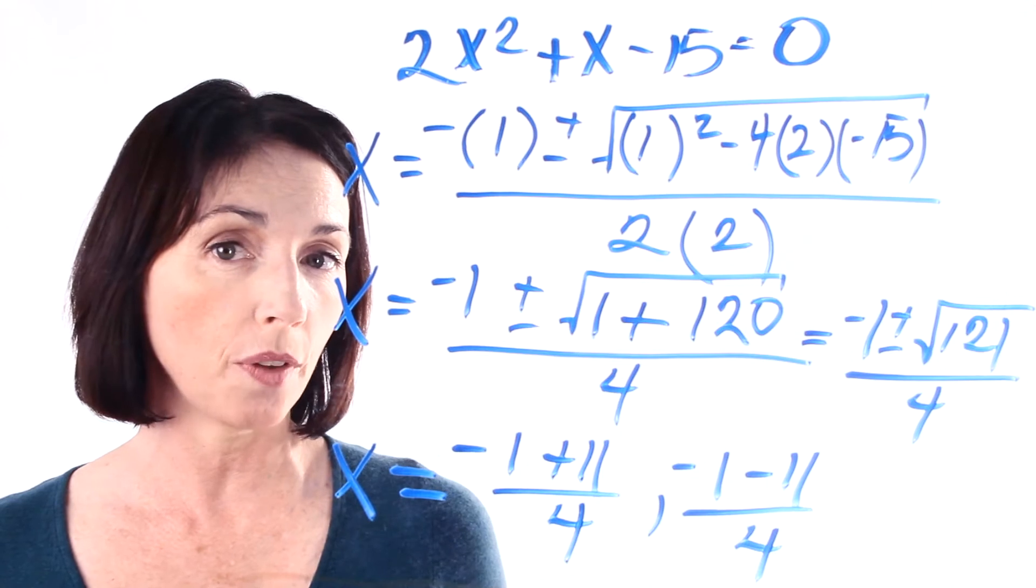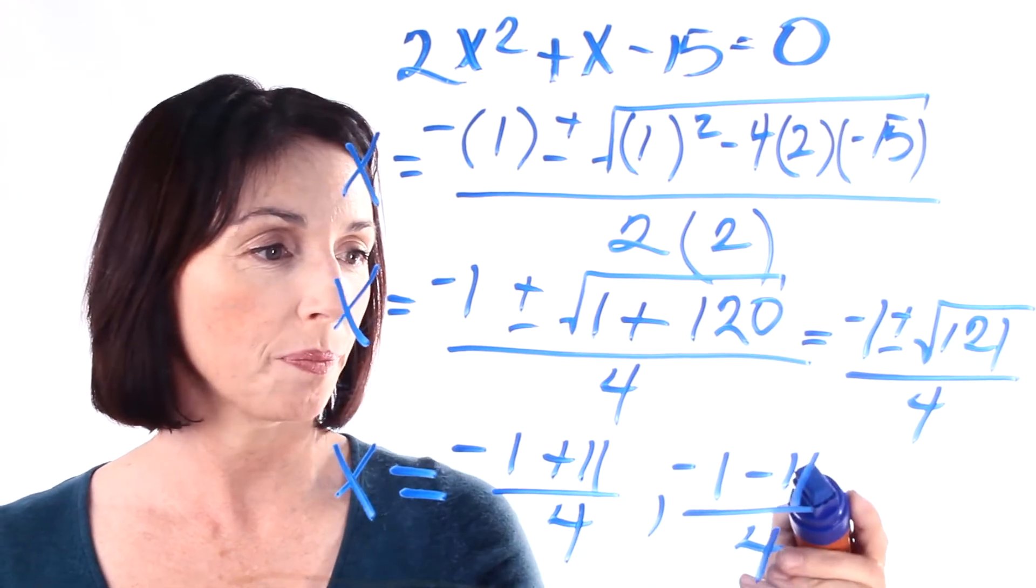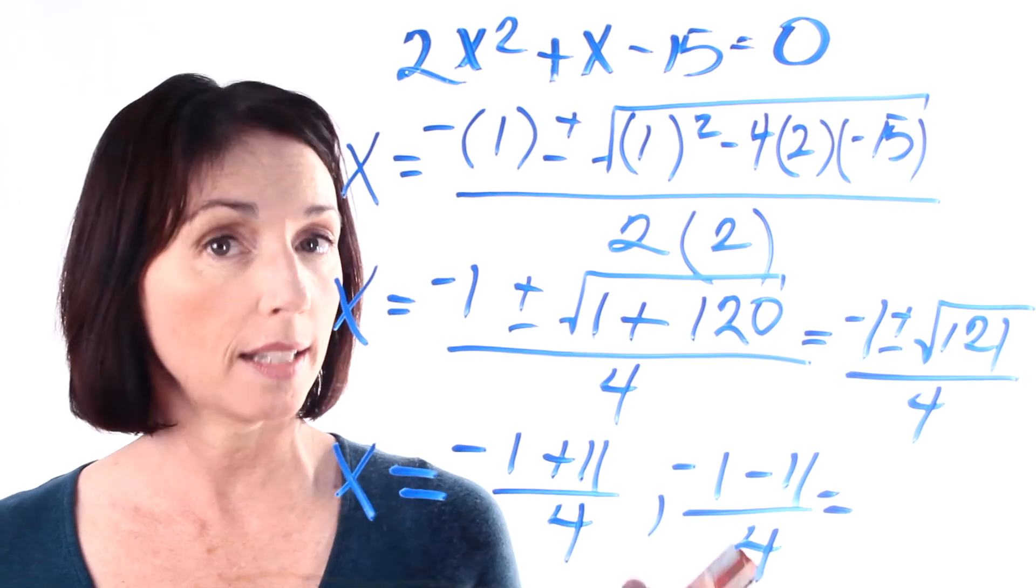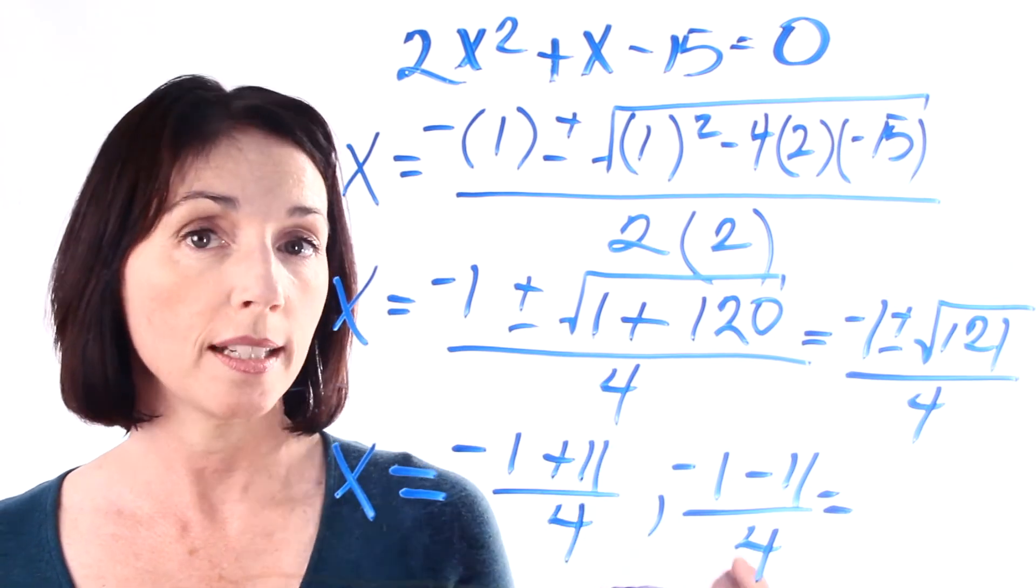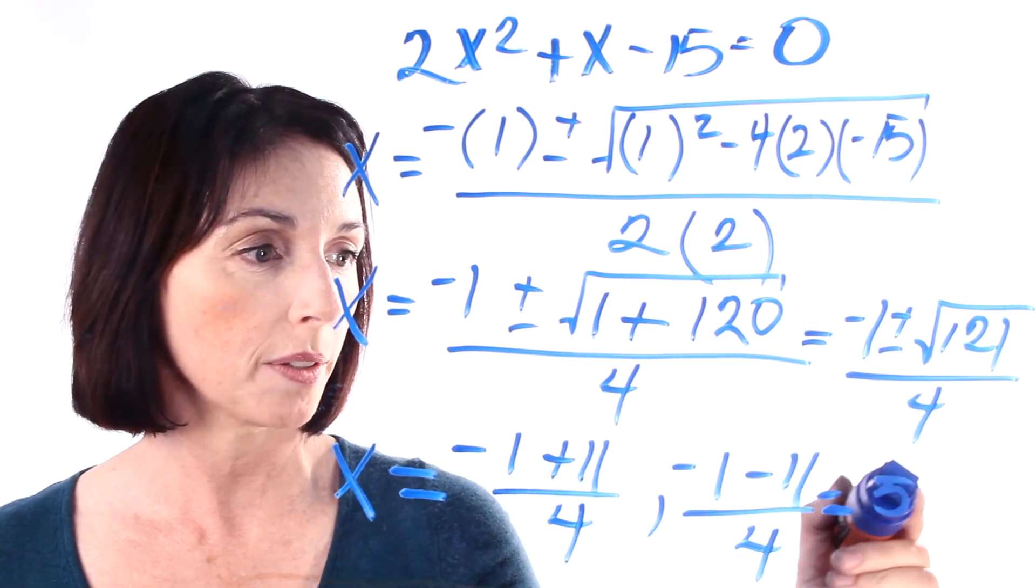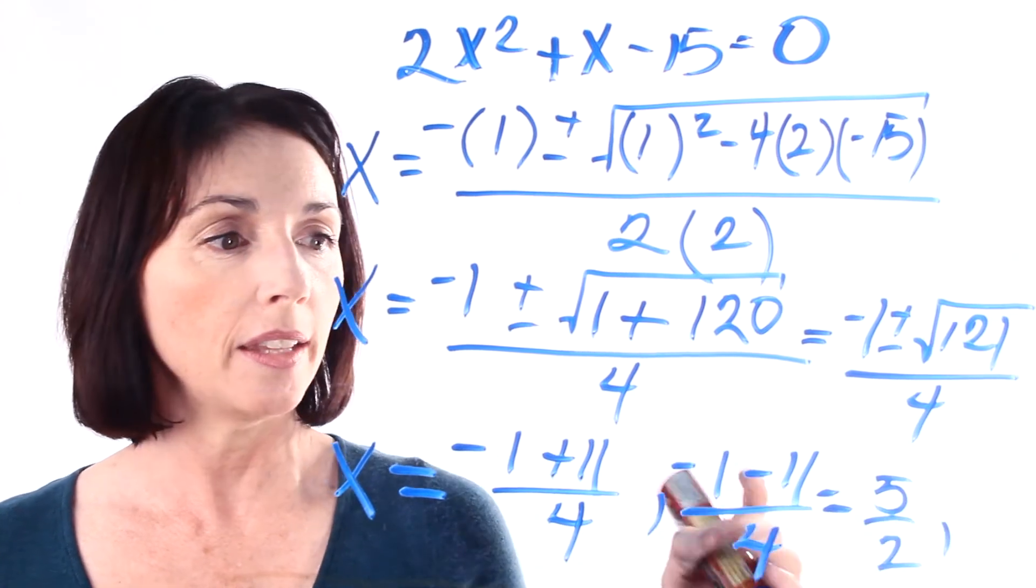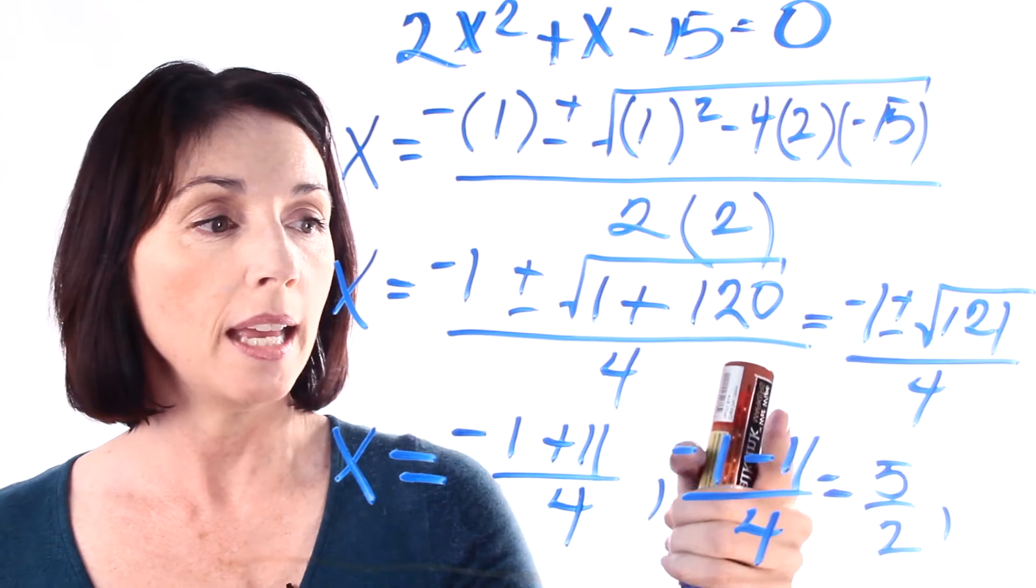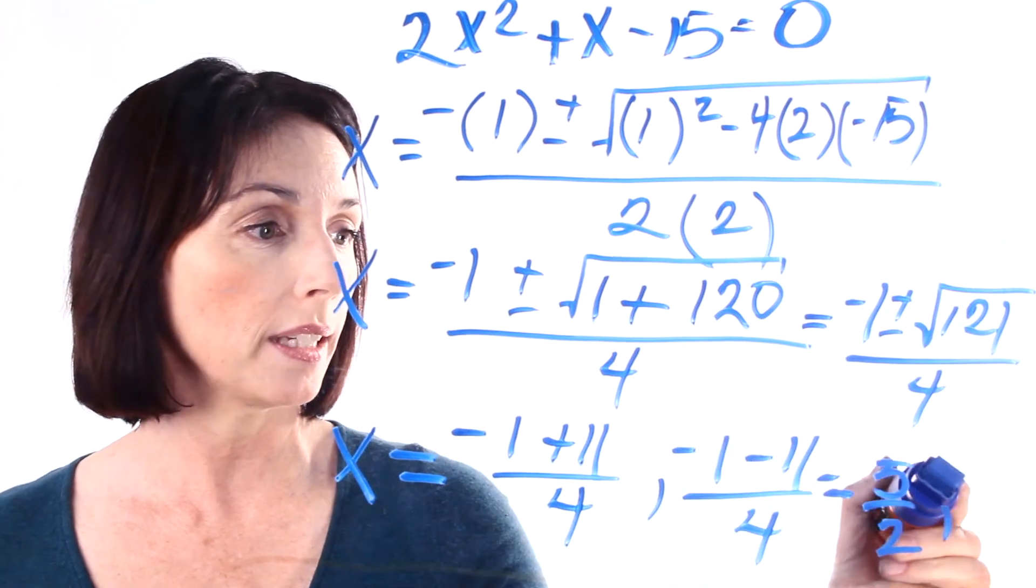Now all we have to do is simplify these a little bit and we'll be good to go. So minus 1 plus 11 is 10, 10 over 4. 10 over 4 reduces to 5 halves. And then here we have a negative 1 minus 11, that's negative 12. Negative 12 divided by 4 is negative 3.